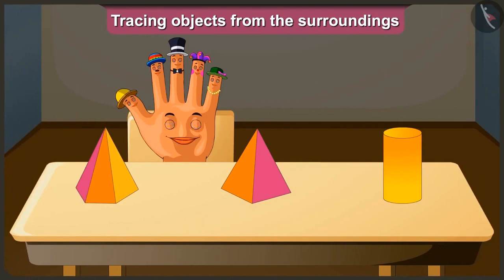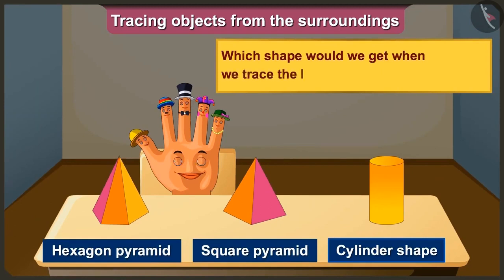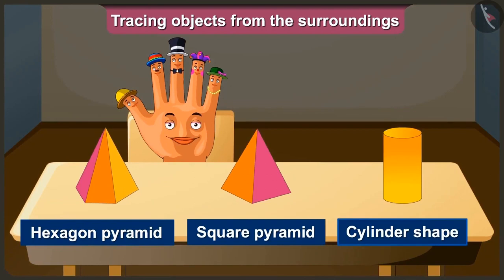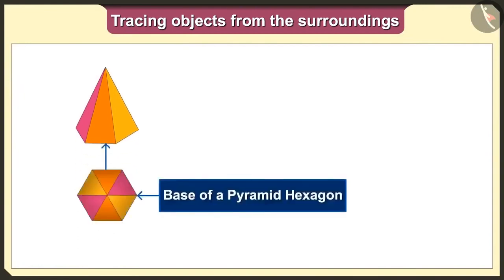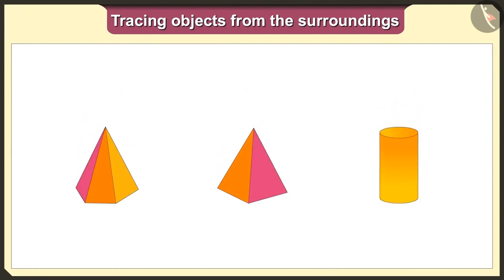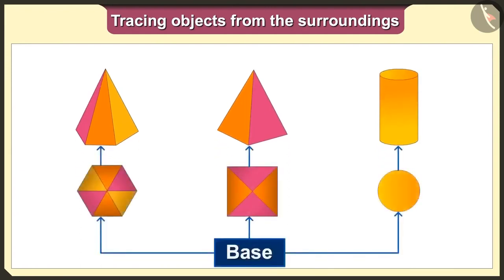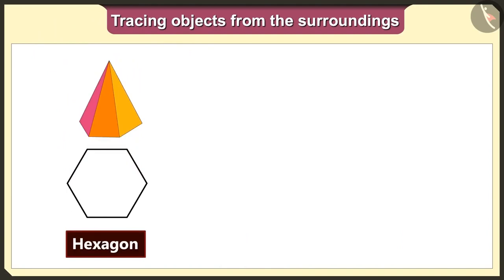Friends, did you practice tracing of objects? Now tell me which shape we would get when we trace these solid shaped blocks. First of all, we will keep the hexagon pyramid on a paper and trace it. The base of this hexagon pyramid is a hexagon. When we trace any object, the shape we get will be the same as the base. So when we keep this hexagon pyramid on paper and trace it, we will get the hexagon shape.